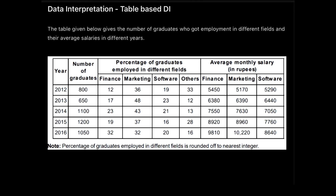This is me Priyasha Das and today we'll be learning a data interpretation set which is a table-based DI. The data is given in the form of a table showing the number of graduates who got employment in different fields with their average salaries. I have three questions in this DI but I'll be concentrating on one question today, then releasing two more parts. The reason for keeping it short is because I want to share the technique and approach for doing these percentage-based questions.